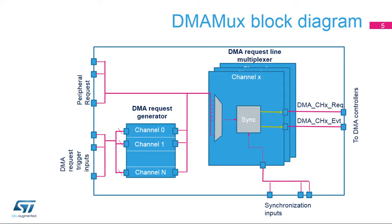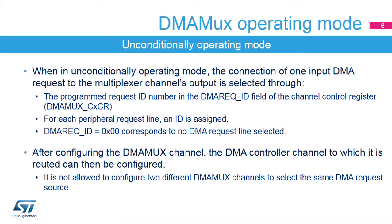The assignment of DMA MUX request multiplexer inputs to the DMA request lines from peripherals and to the DMA MUX request generator outputs, the assignment of DMA MUX request multiplexer outputs to DMA controller channels, and the assignment of DMA MUX synchronizations and trigger inputs to internal and external signals depend on the STM32H7's implementation. Refer to the STM32H7 Reference Manual. The DMA MUX request multiplexer enables routing a DMA request line between a peripheral and a DMA channel in unconditionally operating mode.